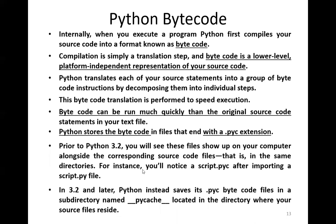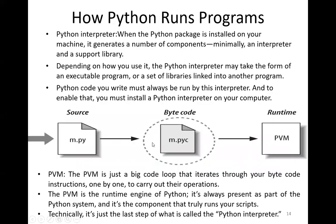The next part of program execution is the interpreter. When you install Python, the minimum components include an interpreter and a support library. So when you compile m.py, it becomes m.pyc bytecode, and then it is interpreted using the Python Virtual Machine — which is simply a big code loop that iterates through each instruction in your bytecode.